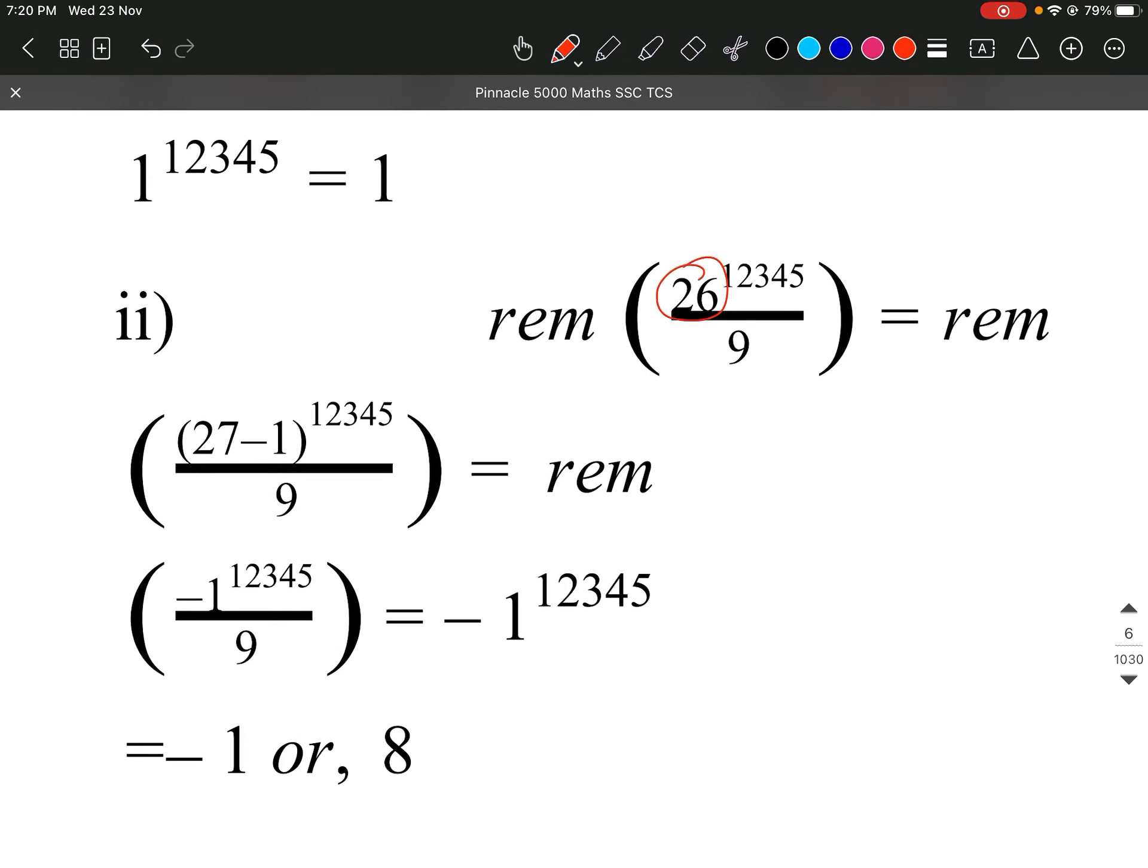Then in this case, we have 26. What can we do? 27 minus 1. Now what is this? 27 will go from 9, now minus 1 is a remainder.